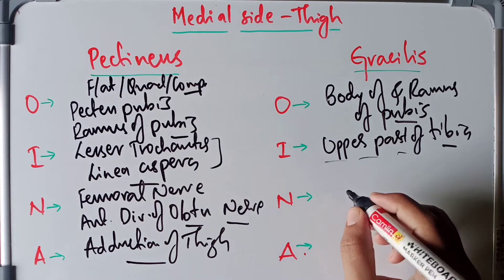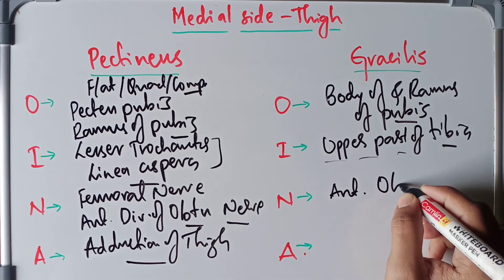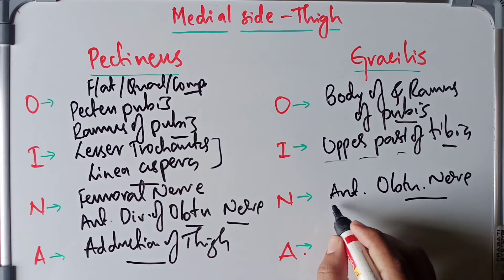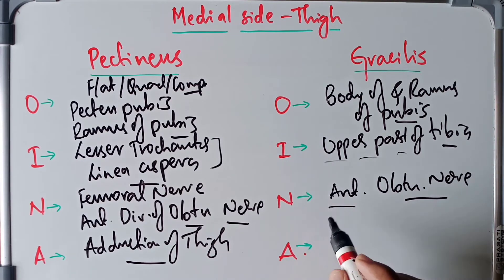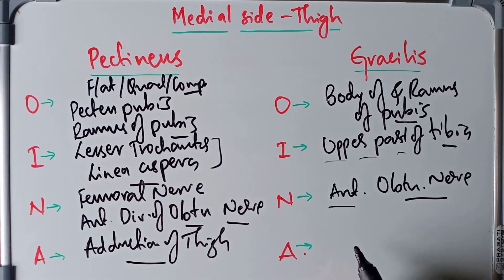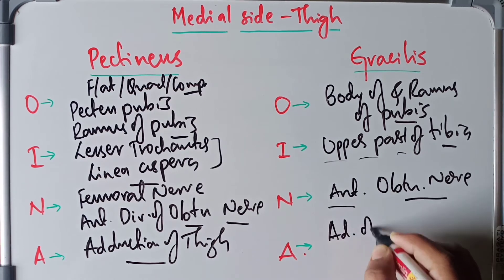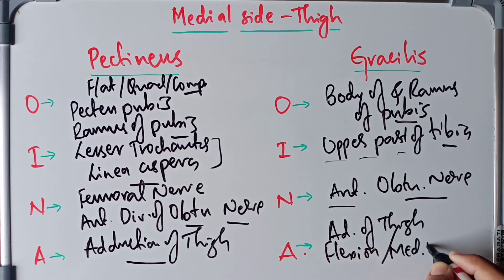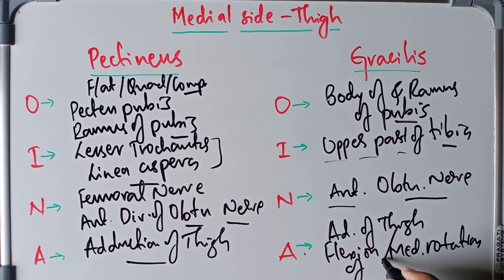The gracilis is supplied by the anterior division of the obturator nerve only. Its actions include adduction of the thigh and also flexion and medial rotation of the leg.